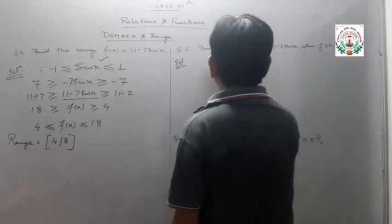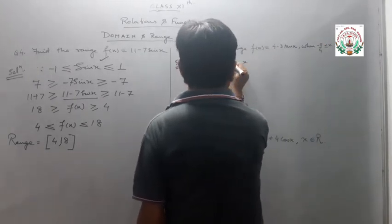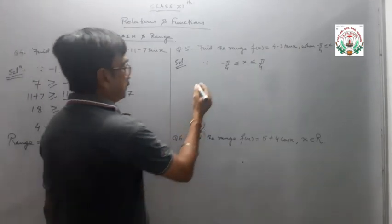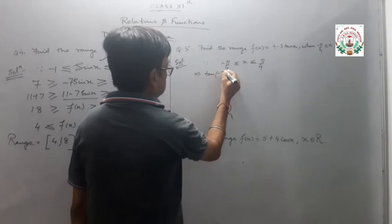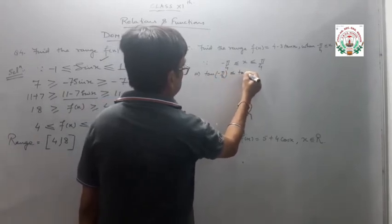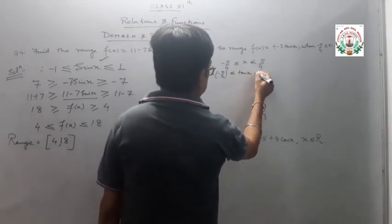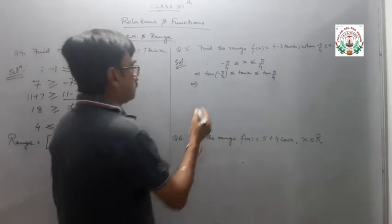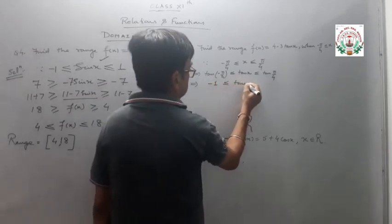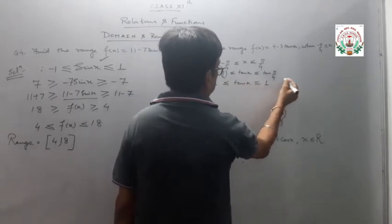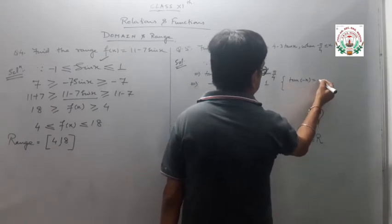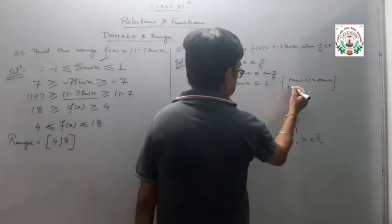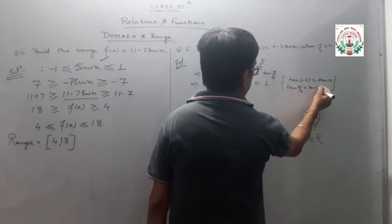For the next question, x is given as greater than or equal to minus π/4, less than or equal to π/4. Since tan of (minus theta) equals minus tan theta, applying tan throughout: tan(minus π/4) less than or equal to tan x, less than or equal to tan(π/4). Since tan 45° equals 1, this gives minus 1 less than or equal to tan x, less than or equal to 1.